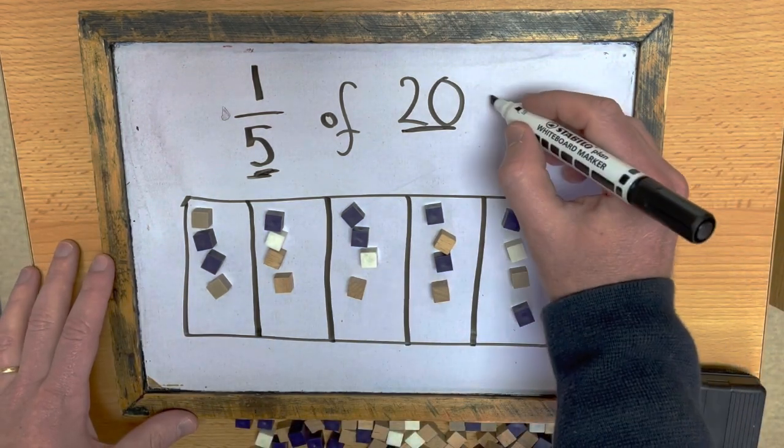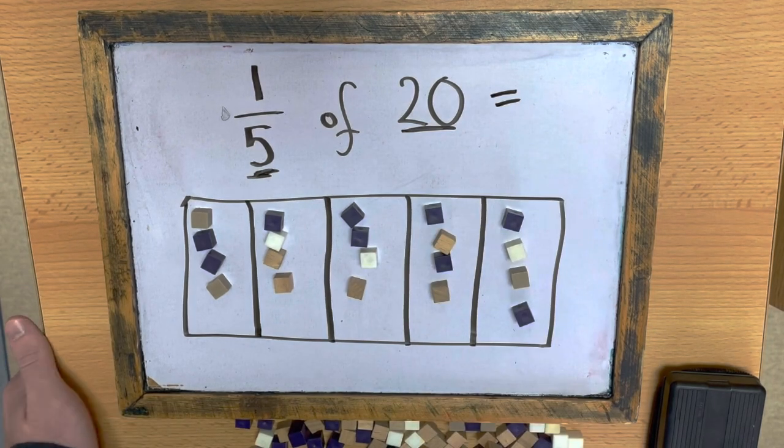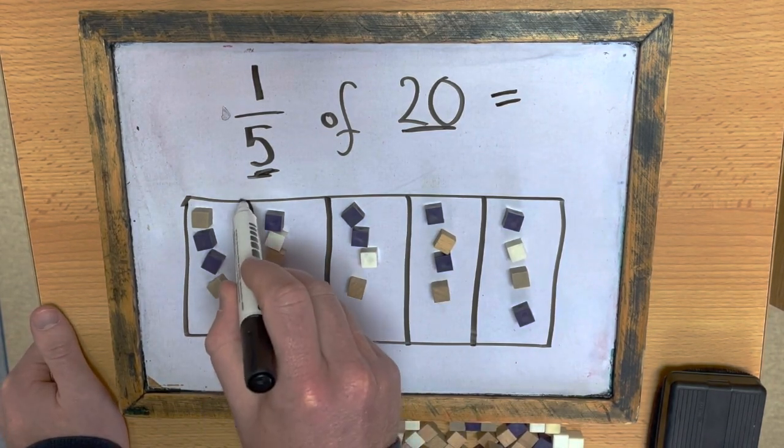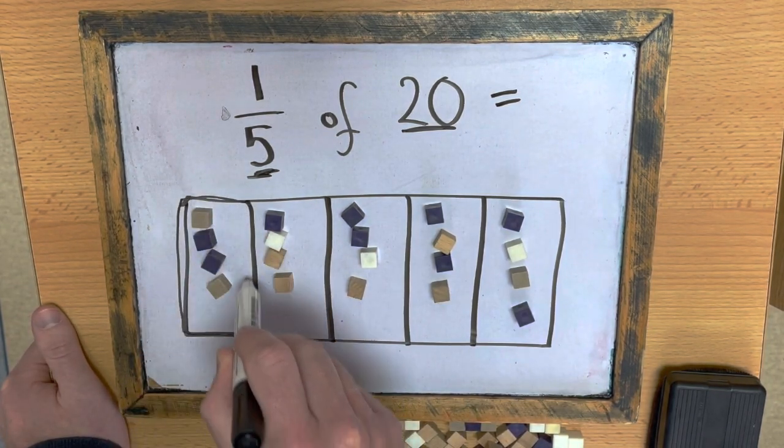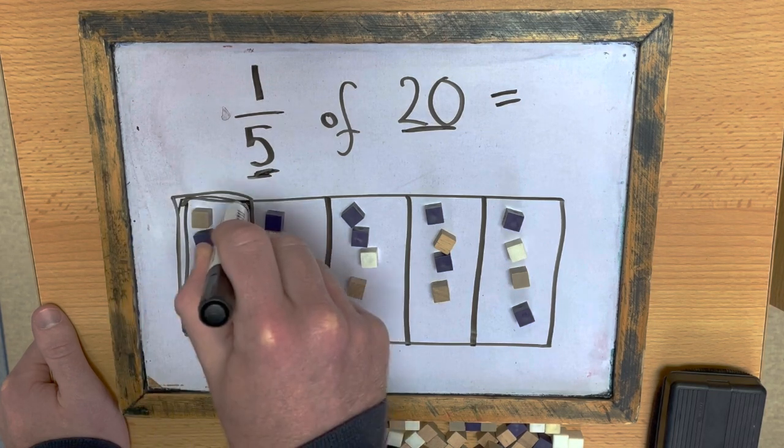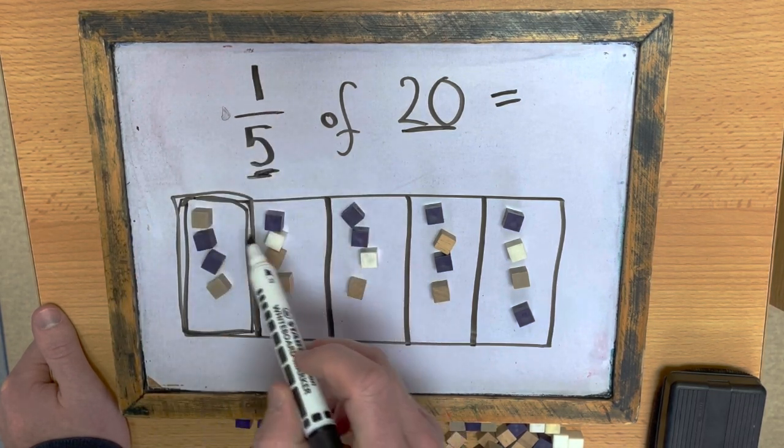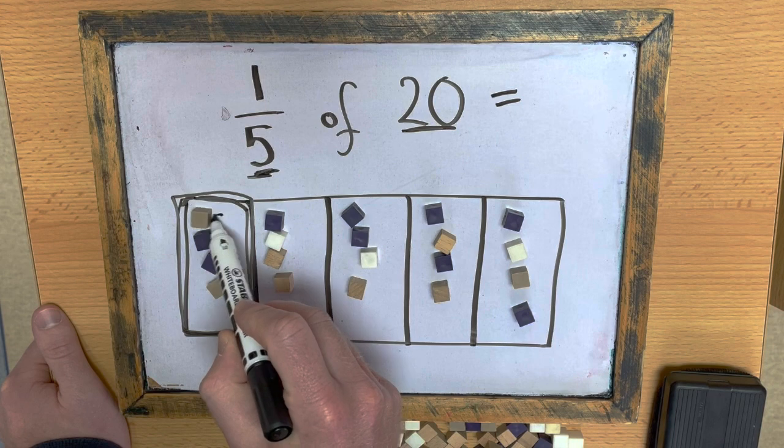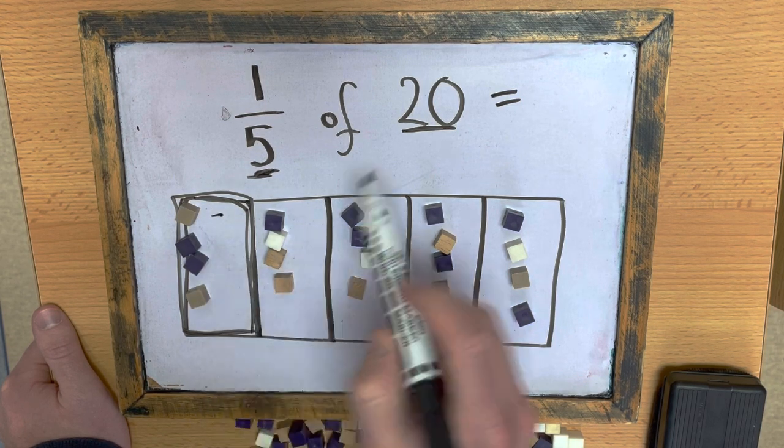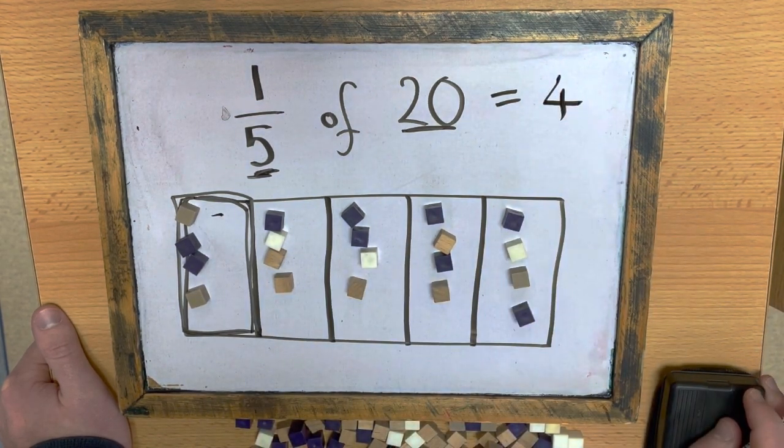Now, to find one-fifth of 20, all I need to do is look at one section. So, one-fifth of 20 is 1, 2, 3, 4. How easy was that?